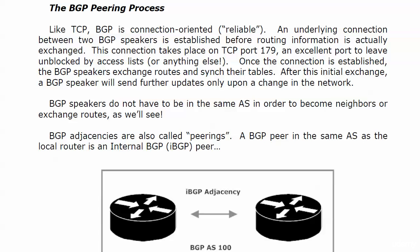Just like TCP, BGP is connection-oriented and considered reliable. We're going to have an underlying connection between two BGP speakers before routing updates are actually exchanged. That connection takes place on TCP port 179, which is a port you've got to leave unblocked by access lists or anything else you happen to be blocking on your Cisco routers. Once that connection is established, the BGP speakers exchange routes.